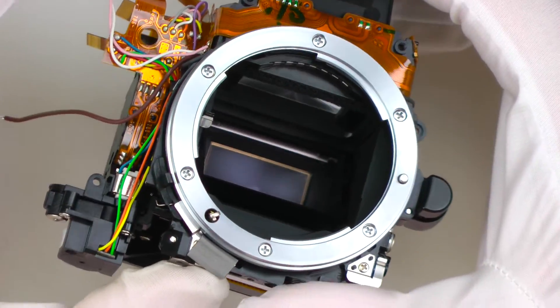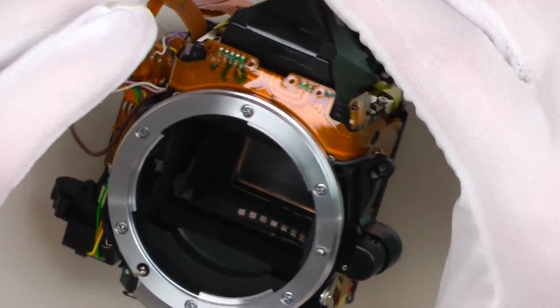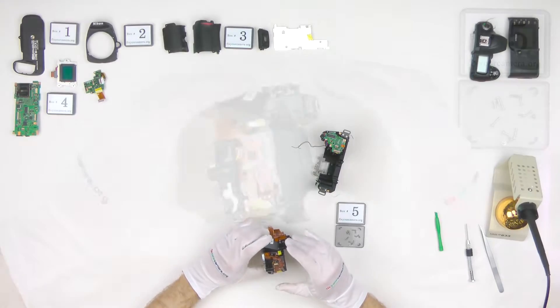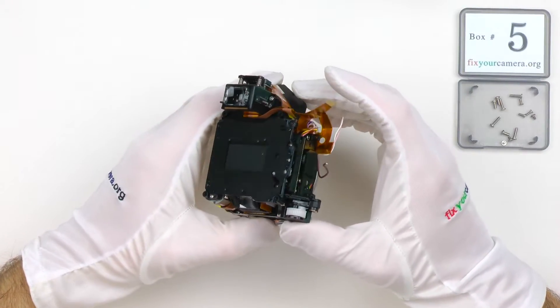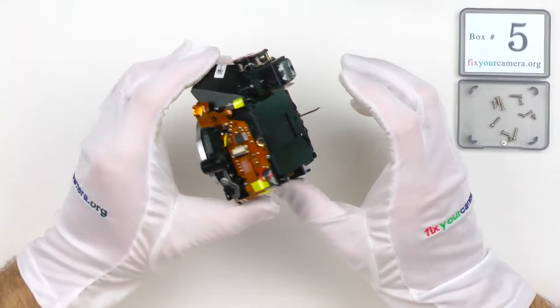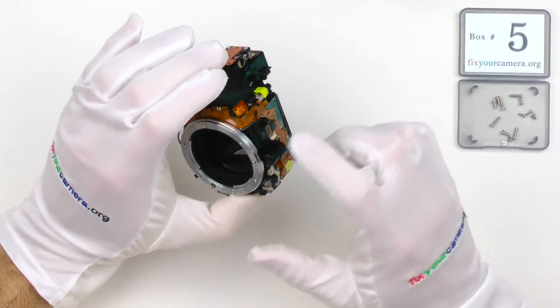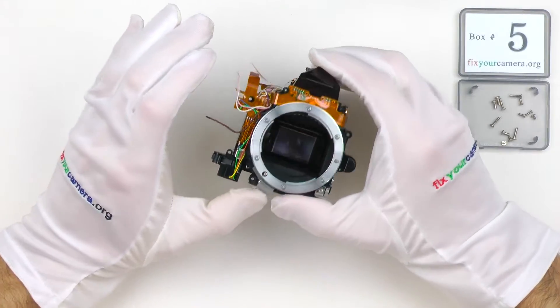If something fails within your camera, statistically there is a pretty good chance it's going to be something mechanical and located within this part. So let's take a look and see what's inside of a typical DSLR mirror box.